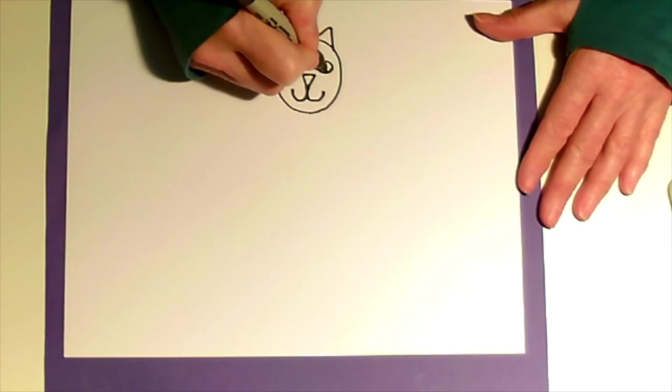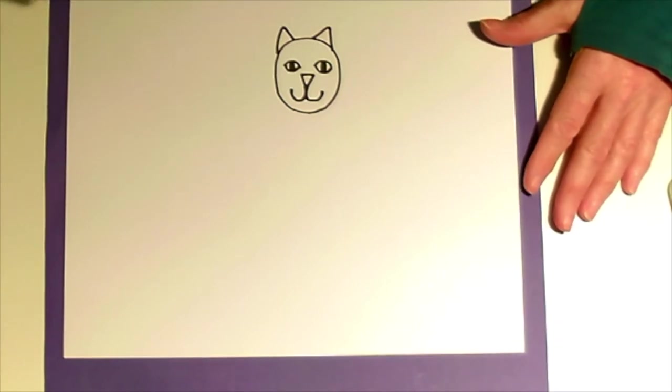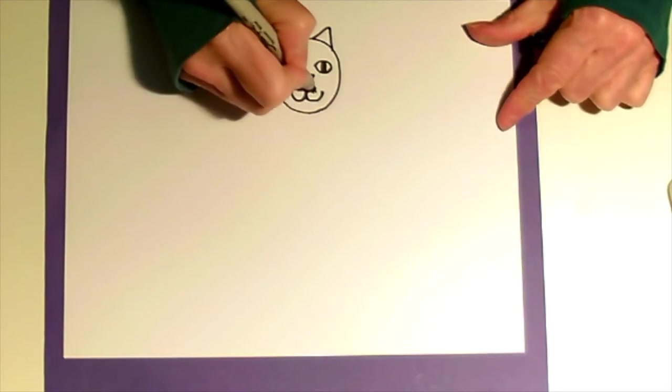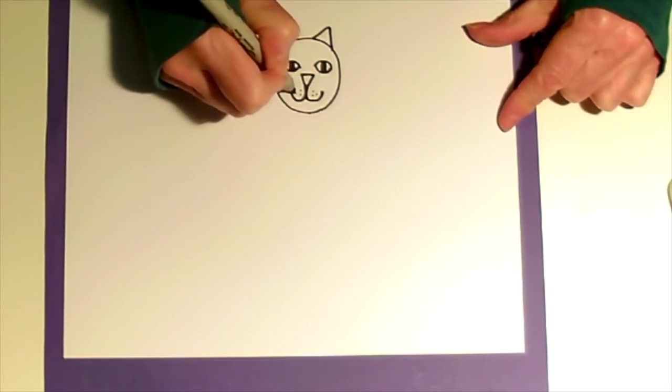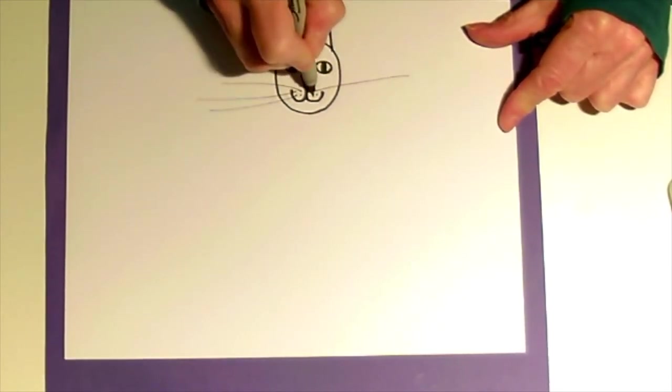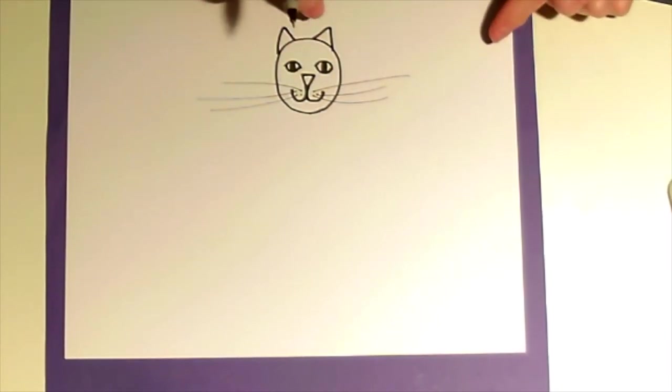As long as we're working on the face we can finish the face by doing the whiskers. I like to put two, three, or four little dots on each side and then a nice long line coming out because whiskers help a cat measure narrow spaces.